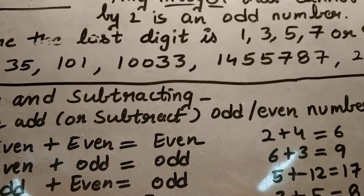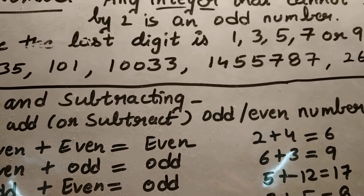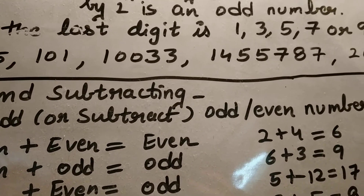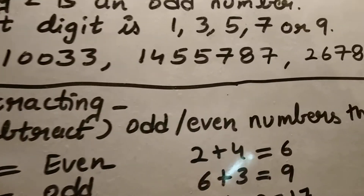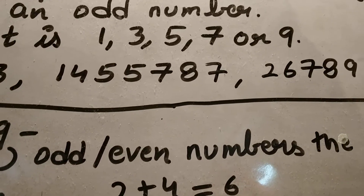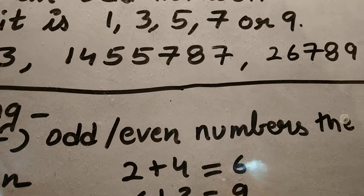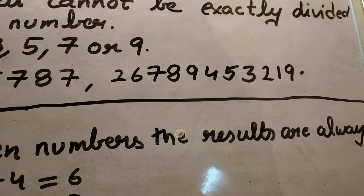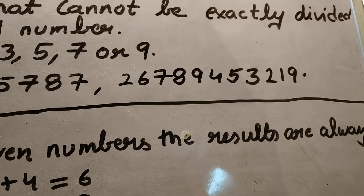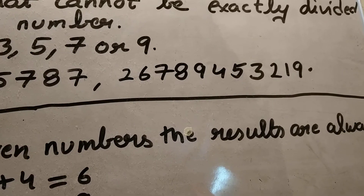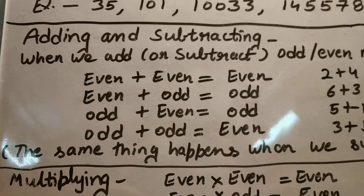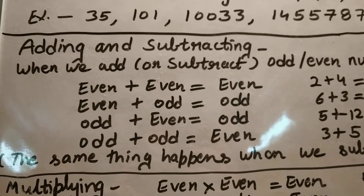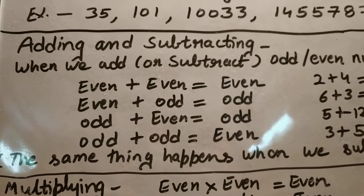Then 101: one is an odd number. Then 10003: three is an odd number. The next example is 1457877 — seven is also an odd number. And in the last example, nine comes in the ones place and nine is not divisible by two, so it is also an odd number.